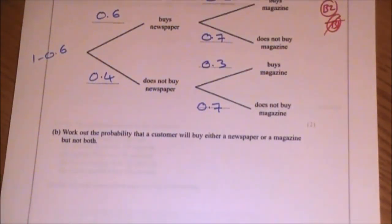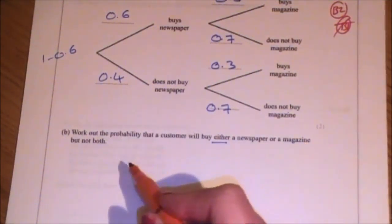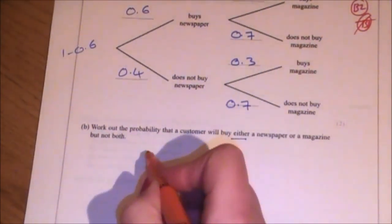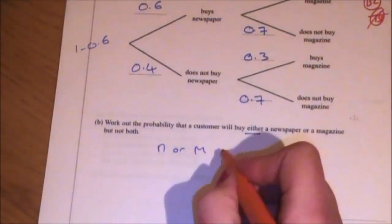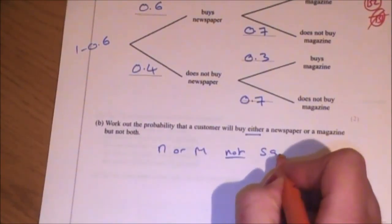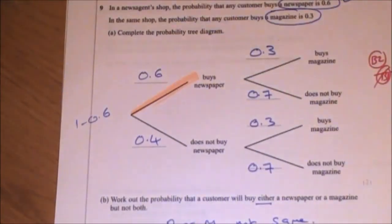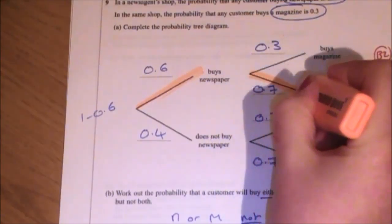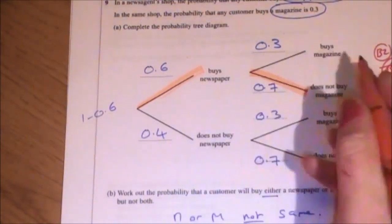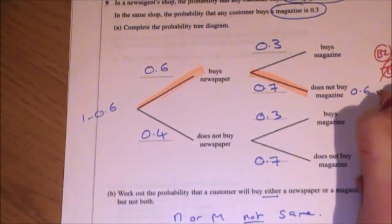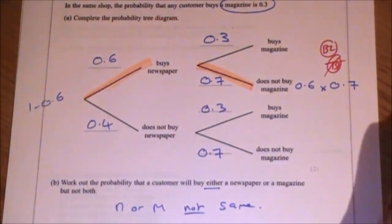Part B wants you to work out the probability that a customer will buy either a newspaper or a magazine, but not both. So I'm interested in the probability of newspaper or magazine and not both. So not the same. Now, there are two ways this could happen. You could either buy a newspaper and does not buy a magazine. So let's deal with that eventuality first. Buys a newspaper, 0.6. And, which we discussed earlier, was times. Does not buy a magazine. So 0.6 times 0.7.